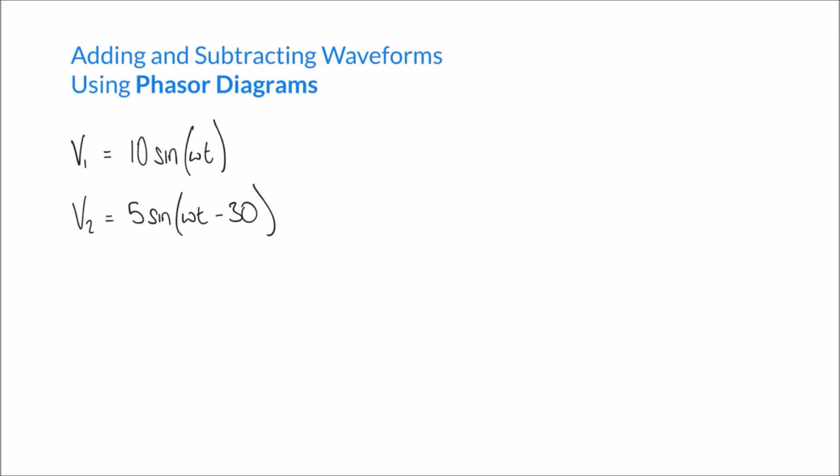Welcome to this video on adding and subtracting waveforms using phasor diagrams. In our previous video we looked at how we can add and subtract waveforms using software such as Microsoft Excel, taking the instantaneous values and adding or subtracting them to produce new waveforms. In this video we're going to take the same two voltage waveforms, V1 and V2, and use a different method — phasor diagrams — hopefully getting the same results.